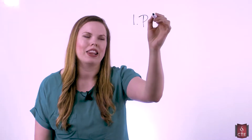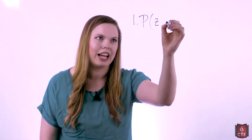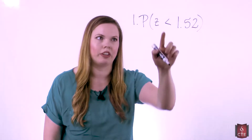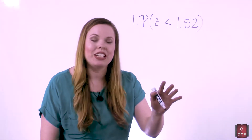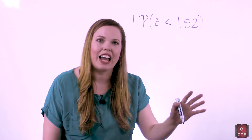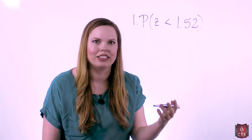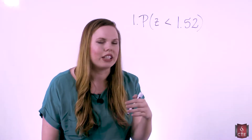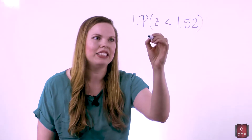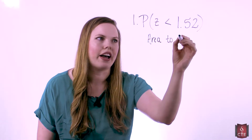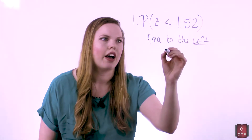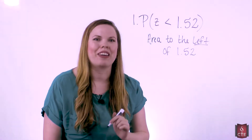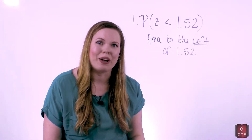If we want to find the probability that z is less than 1.52, this is a standard normal curve problem because of the z. We first need to ask ourselves: is this asking for the area to the left or the area to the right? The inequality sign here is less than, so that is to the left. Our table corresponds to areas to the left.